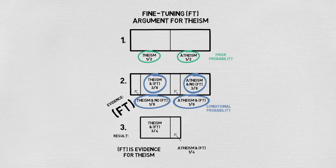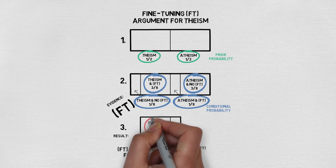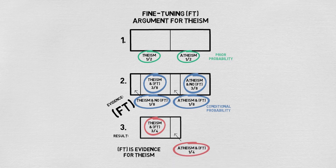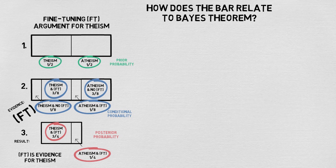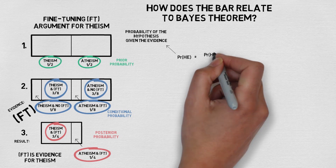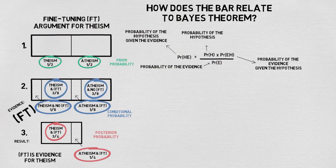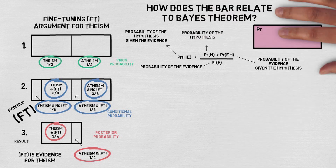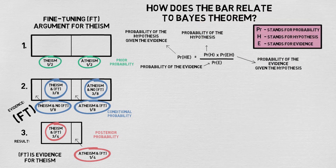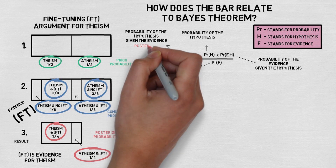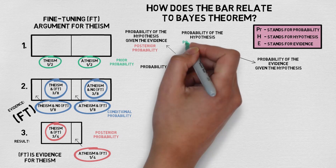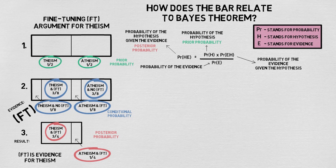Now let's look at the final bar and the two probability assignments there: three quarters for theism and fine tuning, and a quarter for atheism and fine tuning. These are known as the posterior probabilities — that is, the probability after we've taken into account the relevant evidence. With this jargon explained, let's think about how the bar relates to Bayes' theorem. Bayes' theorem says the probability of the hypothesis given the evidence is equal to the probability of the hypothesis multiplied by the probability of the evidence given the hypothesis, divided by the probability of the evidence. Here you can see the formula written out in full, with PR standing for probability, H for hypothesis, and E for evidence. The prior probability corresponds to P(H), the posterior to P(H|E), and the conditional probability to P(E|H).